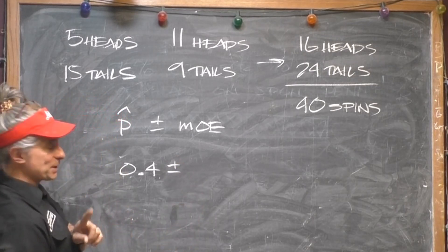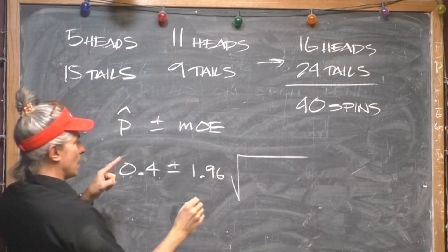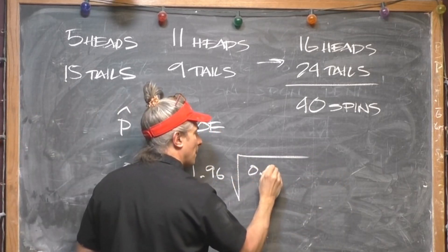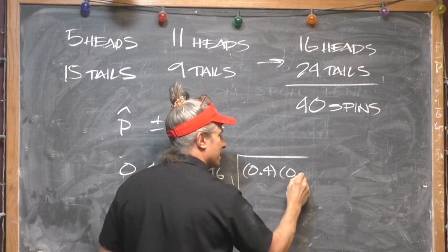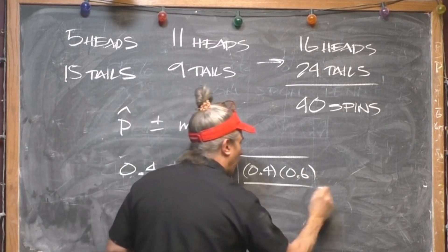Now we're going to use 95% confidence again, so that's 1.96 multiplier, .4 times .6, which is the overall chance of tails now, divided by 40.